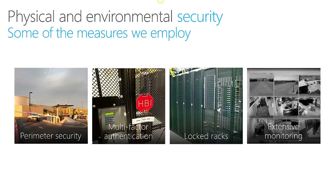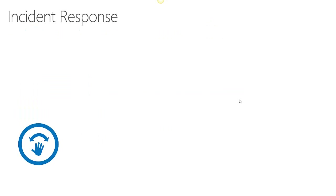Our physical and environmental security is top of the line. Our perimeter security ensures that nobody can access our premises. There's multi-factor authentication to get to the racks, and those racks are locked. There's extensive monitoring across the board, and the personnel working within the data centers is highly skilled. They provide local support when it comes to replacing disks or other failures that just need a touch but don't provide any failure of service for your CRM Online data.